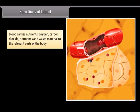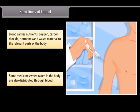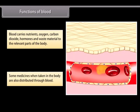Functions of blood. Blood carries nutrients, oxygen, carbon dioxide, hormones and waste material to the relevant parts of the body. Some medicines when taken in the body are also distributed through blood.